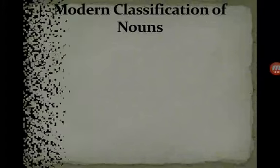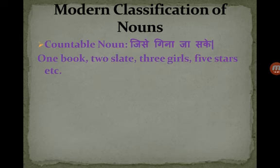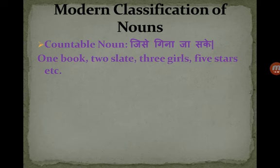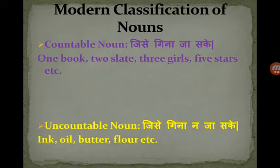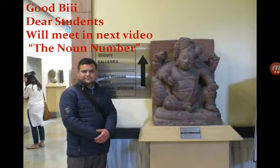The modern classification has two subheadings. First, countable nouns, which can be counted — like one book, two books, two slates, three girls, three boys, five stars — we can count these on fingers. Second, uncountable nouns, which cannot be counted — like ink, oil, butter, flour. We can only measure or weigh them. Can we count butter? No. Can we count oil? No. Similarly, we cannot count ink.